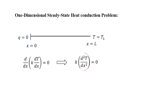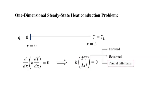We have a second-order derivative term d²T/dx² and want to express it as a difference quantity. We are free to choose forward, backward, or central difference formulation. The central difference formulation is preferred because its truncation error is of order h², making it more accurate than the other two methods.